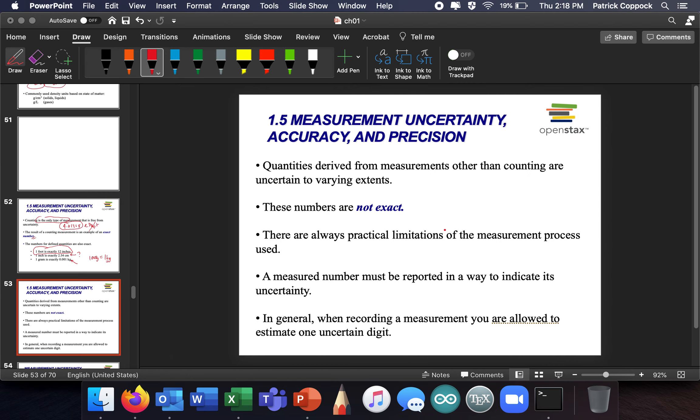Now, everything else is vulnerable to uncertainty. All of the numbers that are given by rulers, calipers, balances, thermometers, these numbers are not exact. And there are practical limitations on measurement processes used. And so it's okay that they're not exact, but we have to communicate how much we know about them. We have to communicate our uncertainty.